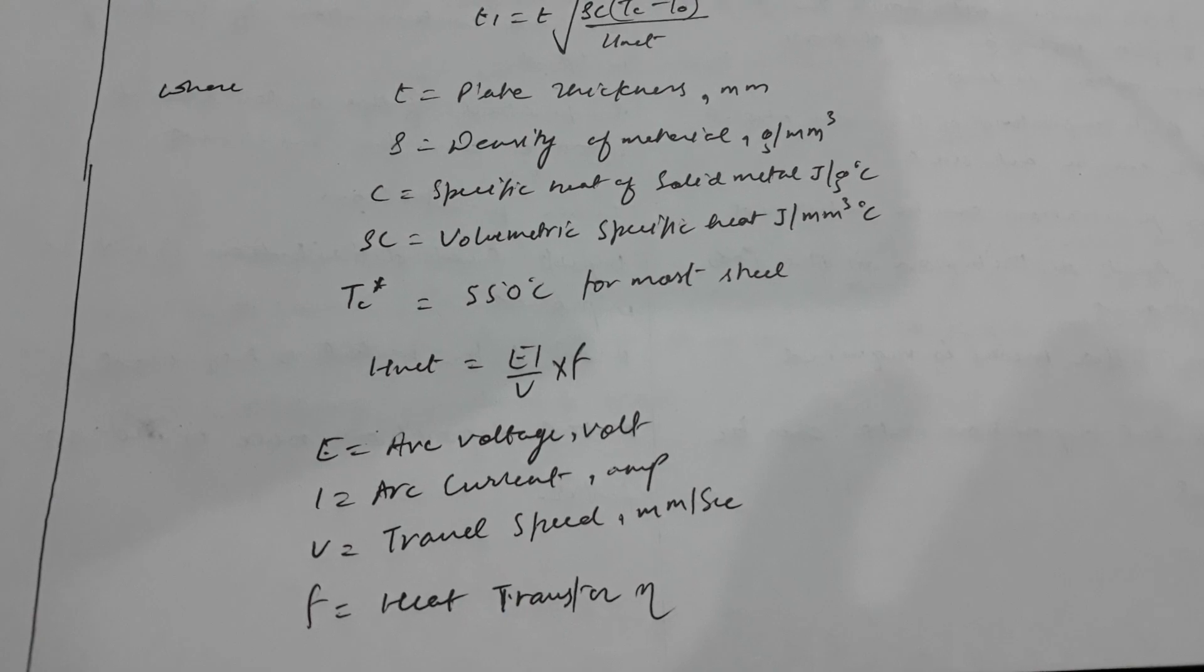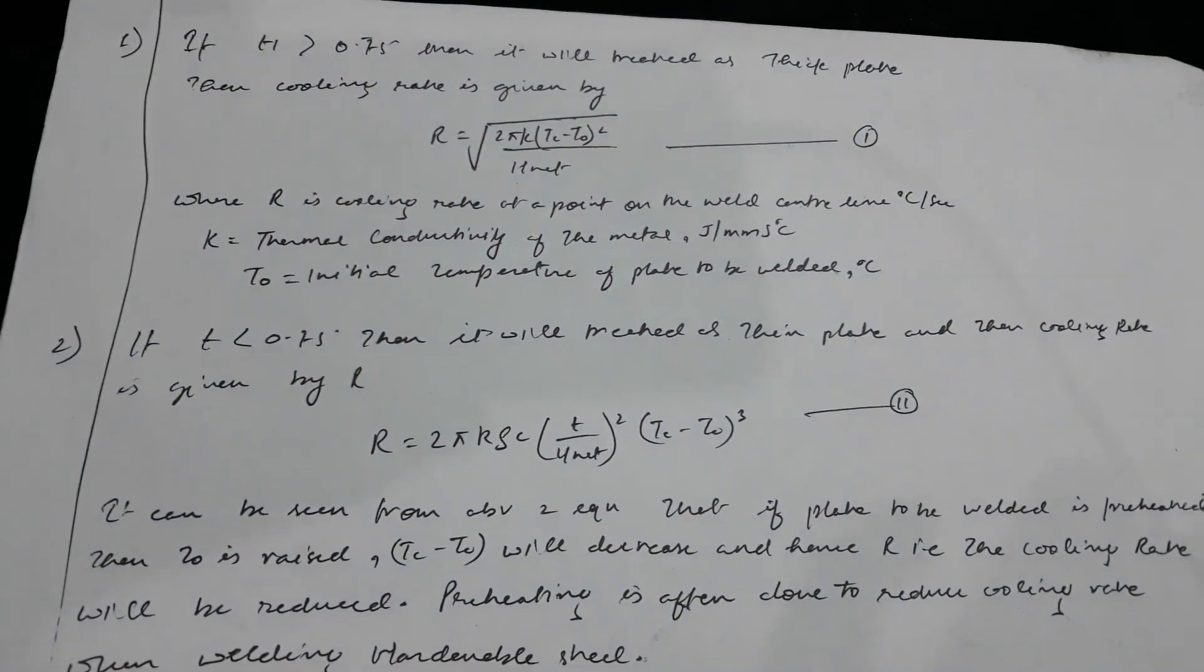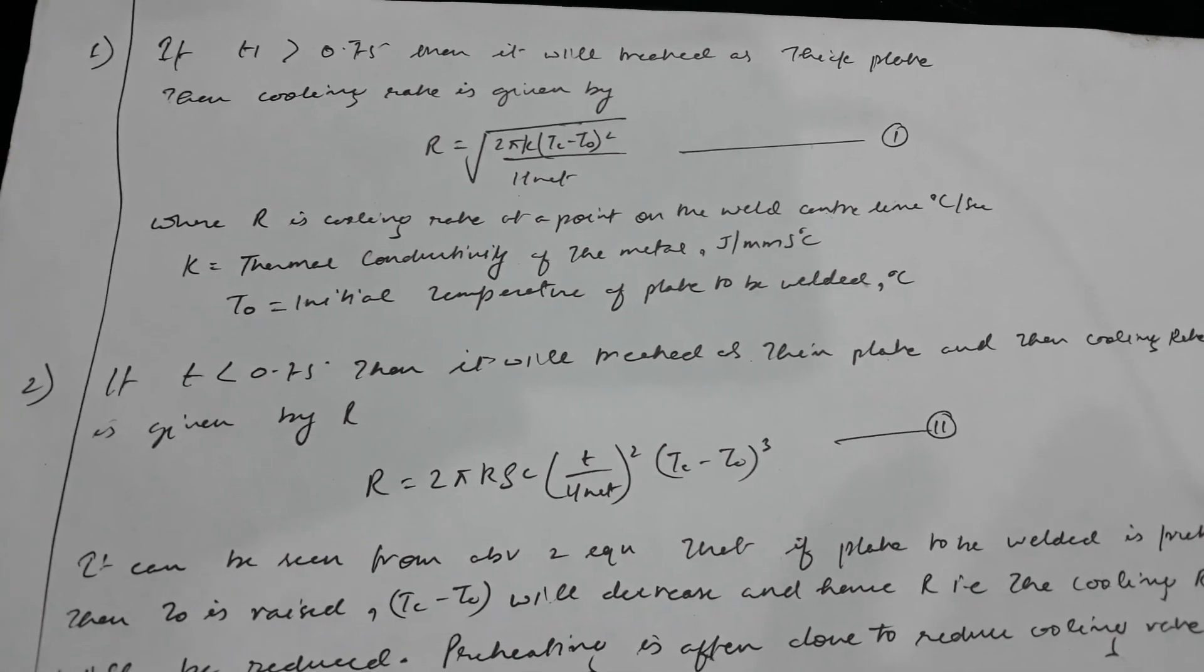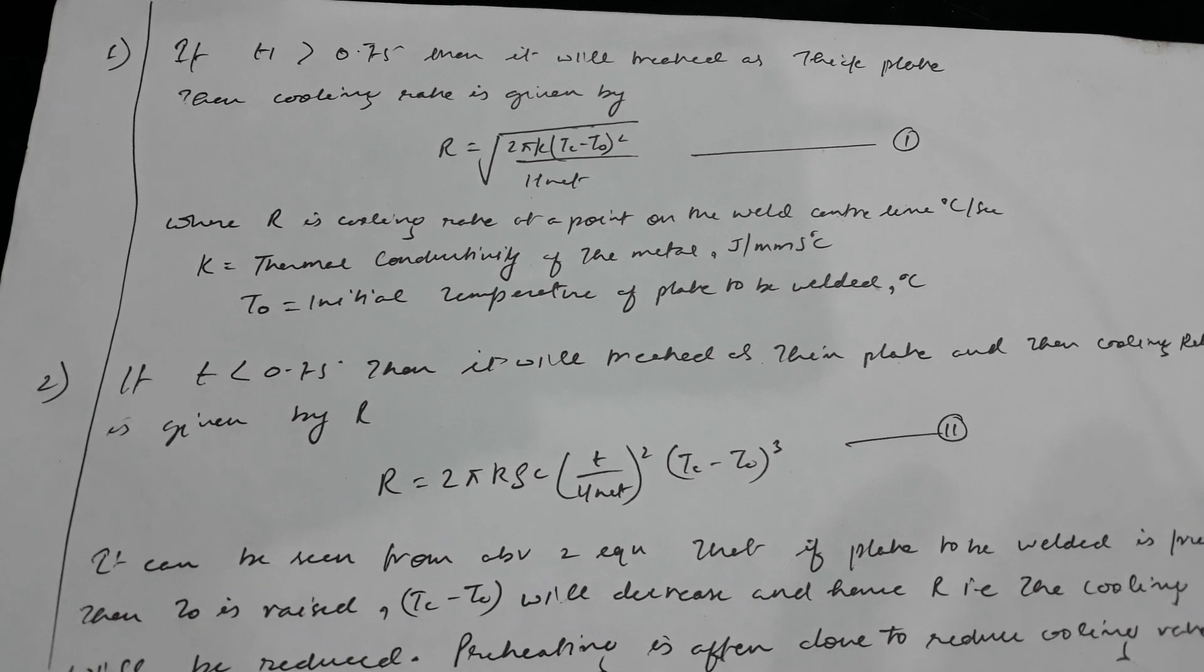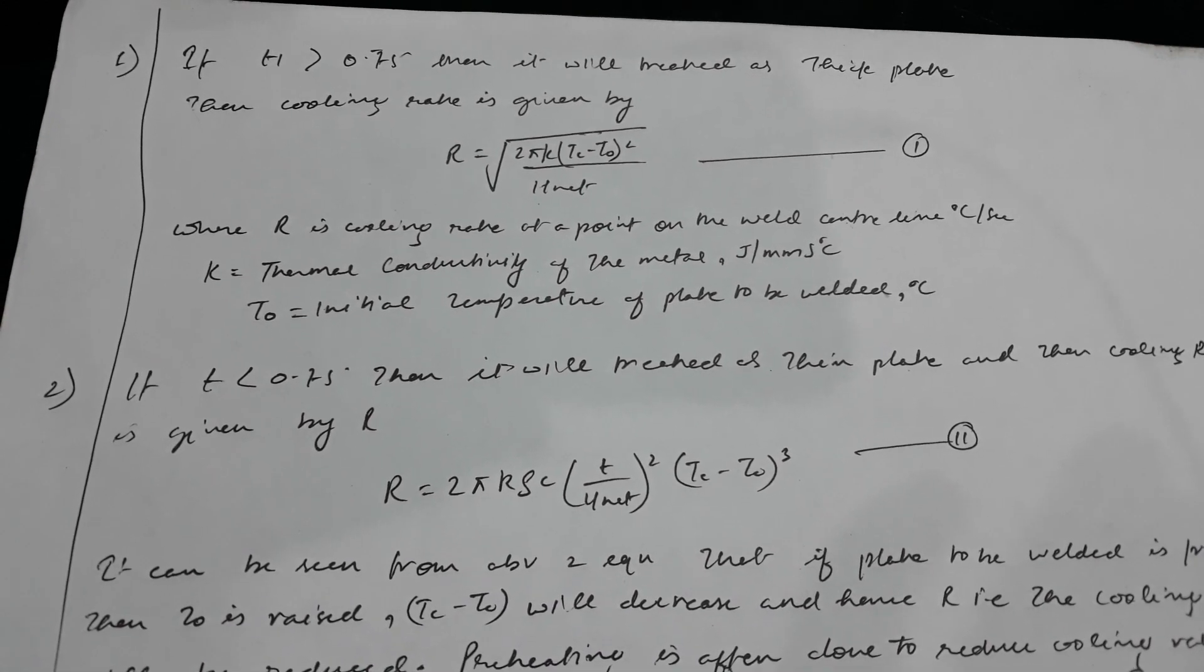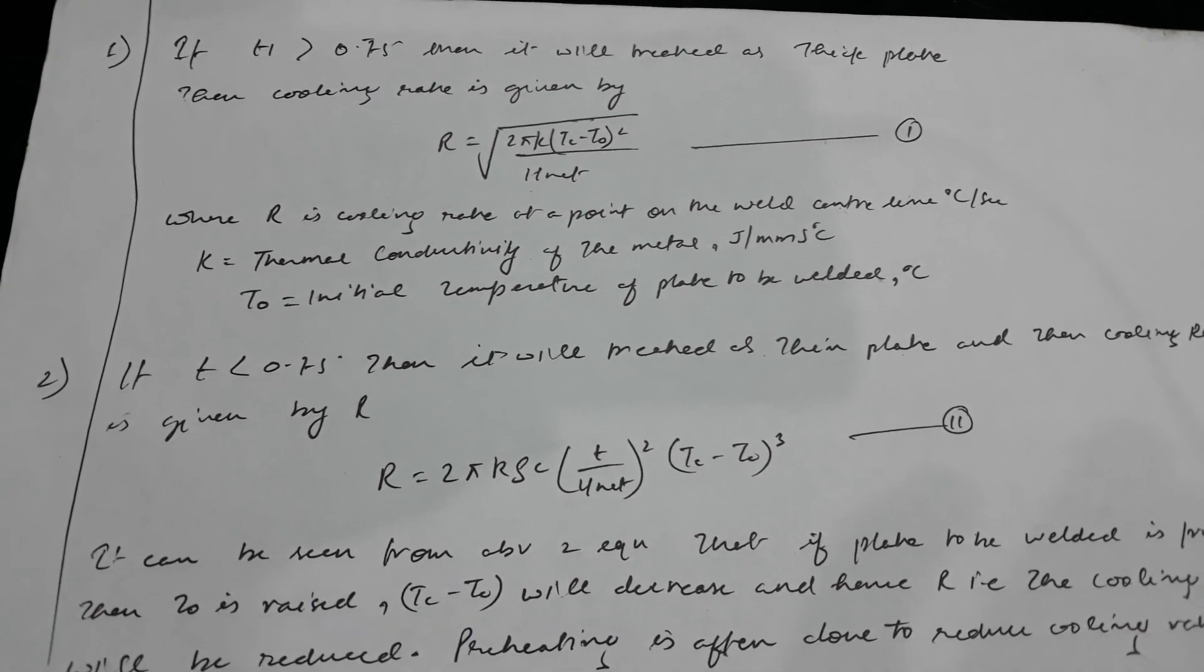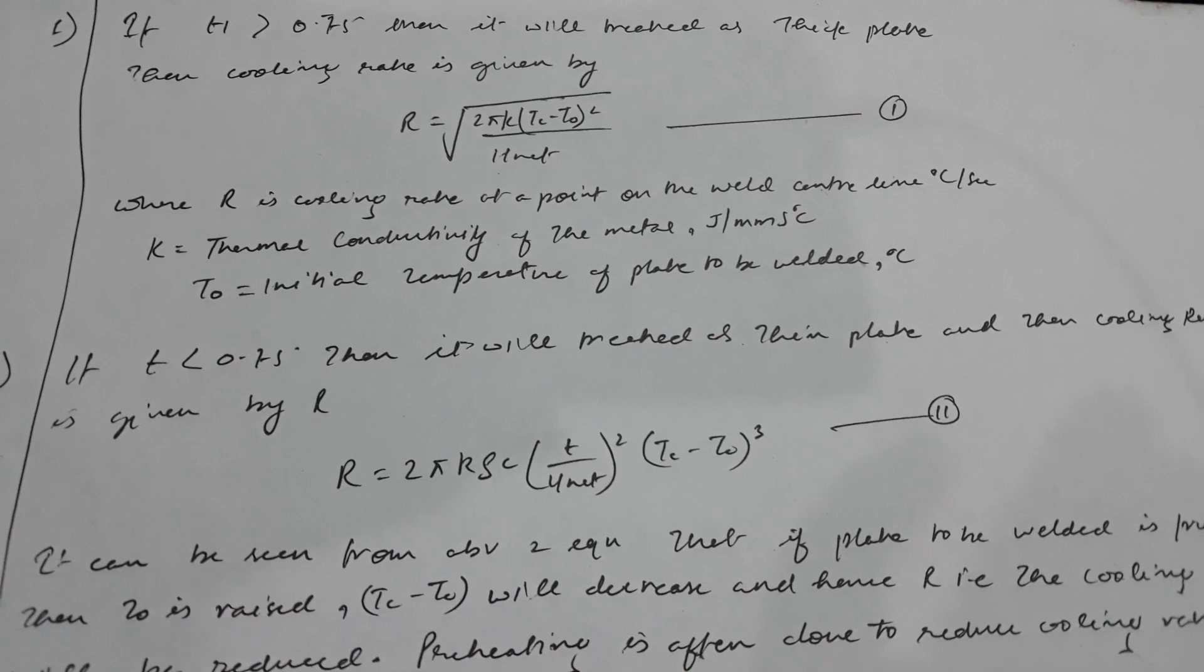There are two cases: If t1 is greater than 0.75 times t, then we will treat it as a thick plate. And if t1 is less than 0.75 times t, we will treat this plate as a thin plate. The cooling rate of thick plates is given by R.